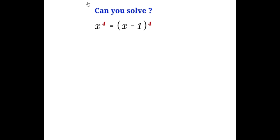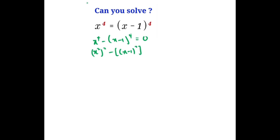So doing this, we have that x to the power of 4 minus x minus 1 to the power of 4 equals 0. Rewriting this, it can be written as x squared, squared minus x minus 1 squared, squared equals 0.